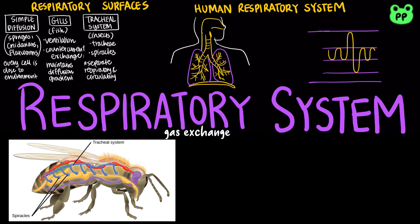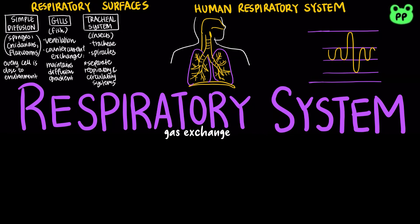The circulatory system mainly transports nutrients and waste instead of oxygen. Most vertebrates breathe through lungs, which are infoldings of the body surface, with alveoli as the site of gas exchange.